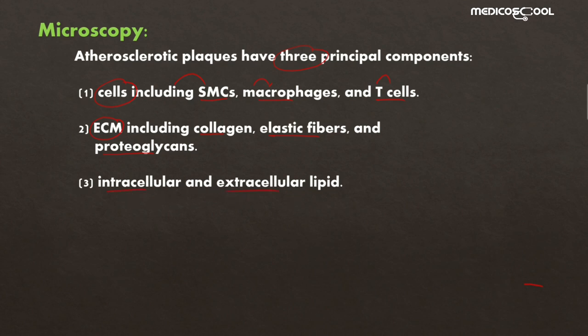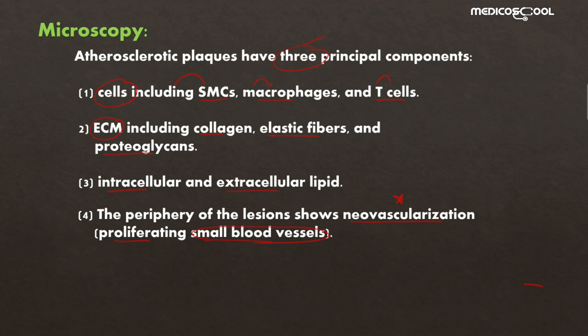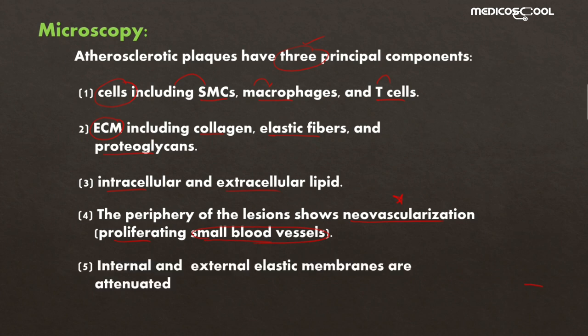These are the three principal components of atherosclerotic plaque: the cells, the extracellular matrix, and the lipids. An important fourth feature is that the periphery of the lesion shows neovascularization — proliferating small blood vessels. These can be seen at the periphery of the atherosclerotic plaque.